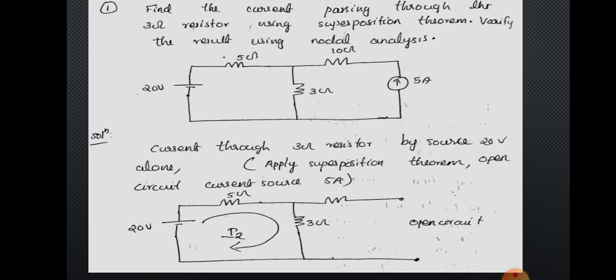Using superposition theorem, first consider the effect of the voltage source alone, that is 20 volt alone. The current source effect is not considered — it is replaced by an open circuit. When considering the voltage source alone, the current source is open-circuited. The circuit will have the 20 volt battery, 5 ohm, 3 ohm, and 10 ohm resistances, with the current source replaced by an open circuit.